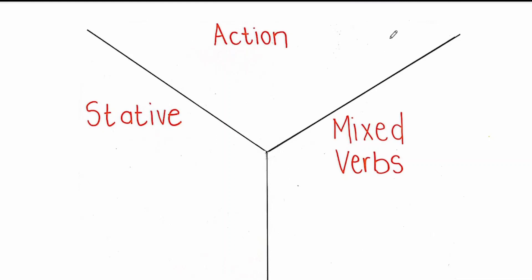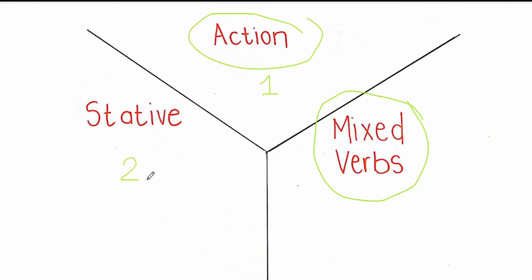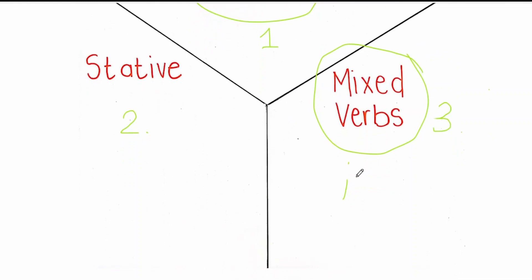Today, I want to show you three different kinds of verbs. We will be studying mixed verbs in more detail. Action verbs are the first type. We also get stative verbs — I discussed that in the previous video — and today we are going to look at mixed verbs. So the reason I want to show you this is so that you don't get confused when you are using the present continuous tense. Should you add -ing, or should you not add -ing and keep it stative?